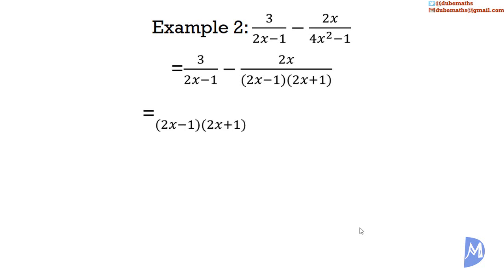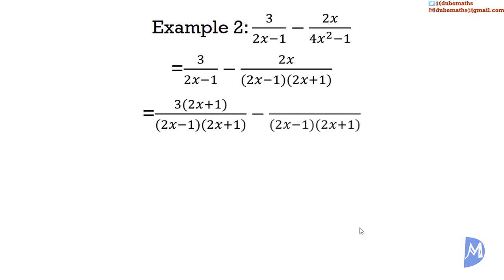We want to represent both fractions as fractions over (2x minus 1)(2x plus 1), the LCM. For the first fraction, this means multiplying the denominator by (2x plus 1), so we multiply the numerator by (2x plus 1) to keep the fraction equivalent. The second fraction is already over (2x minus 1)(2x plus 1), so we keep it the same.